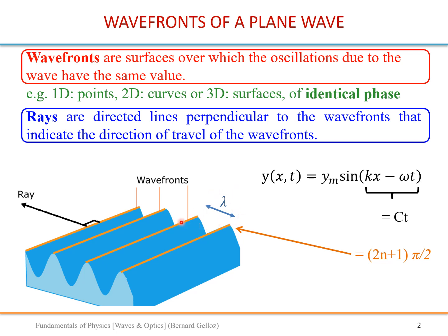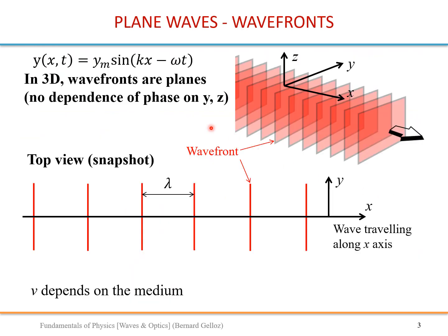Notice that the distance in space between two wave fronts is of course one wavelength — it is one period in space. Here we represent plane waves and their wave fronts. A plane wave can be represented by this equation we have used so far. This equation does not depend on y and z, therefore all the values are the same in the y-z plane, and therefore the wave fronts for a plane wave are just planes.